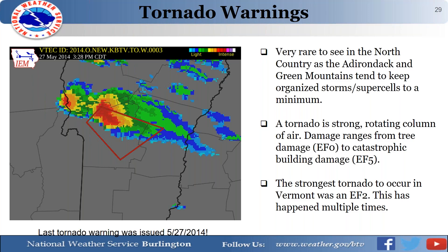Tornado warnings are very rare across the north country — we don't get supercells very often here. The last tornado warning issued by our office was May 27, 2014 — over six years ago. A tornado is defined as a strong rotating column of air; damage ranges from EF0 (70–90 mph, tree damage) to catastrophic building damage. The strongest tornadoes on record in Vermont were EF2, both occurring in Windham County in southeastern Vermont.